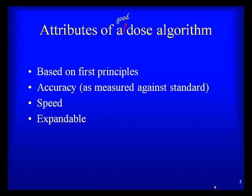What are the attributes of a good dose calculation algorithm? It needs to be based on first principles of physics. It needs to be accurate — accuracy is typically measured against measurements obtained in stylized phantoms, water or inhomogeneous phantoms. It needs to be fast because physicians and colleagues expect plans done quickly. It also needs to be expandable so new modalities like IMRT or VMAT can use the same algorithm.